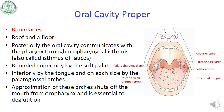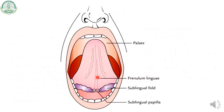The approximation of these arches shuts off the oral cavity from the oropharynx, and it is essential during deglutition. On the tongue, you can identify the frenulum linguae, the sublingual fold, and the lingual papillae, on which there are openings of the sublingual gland. You can also see the palate here.